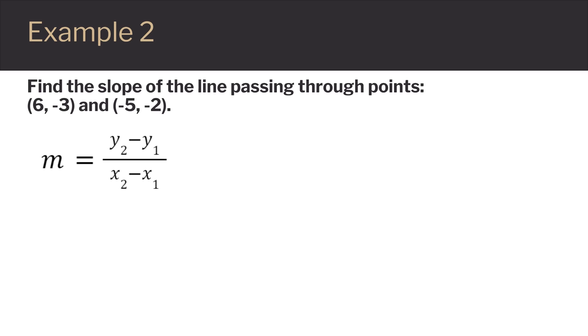I'm going to start with using negative 2 first. So on the top, I would have negative 2 minus my other y-value, which in this case is negative 3.